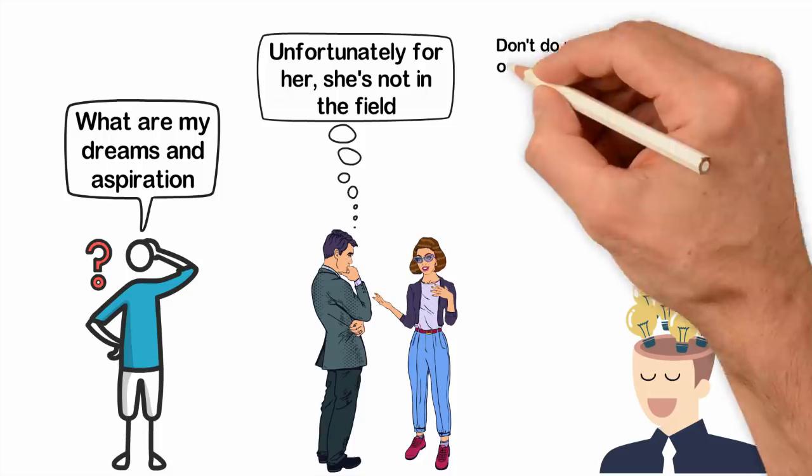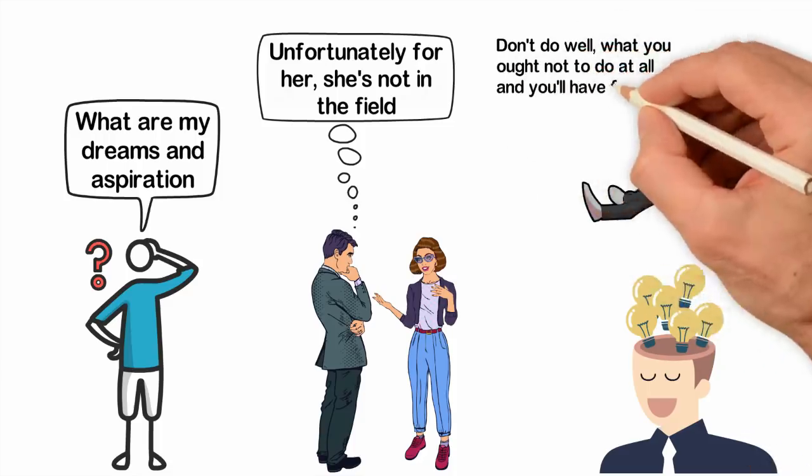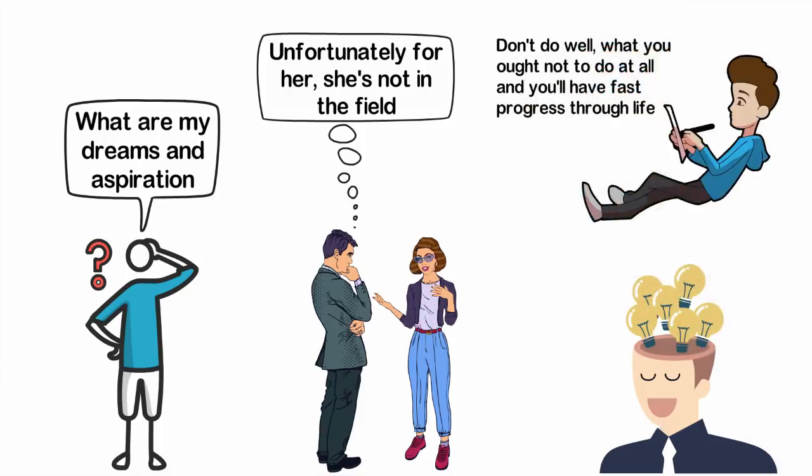Don't do well what you ought not to do at all and you'll have fast progress through life. Doing something well is a skill but why do well what you ought not to do at all?